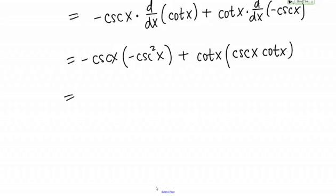In the first term here, I've got negative cosecant times negative cosecant squared. Negative times a negative is going to give me a positive and that's going to be cosecant cubed of X plus, now in this second term I've got a cosecant and then two cotangent, so cotangent squared of X.